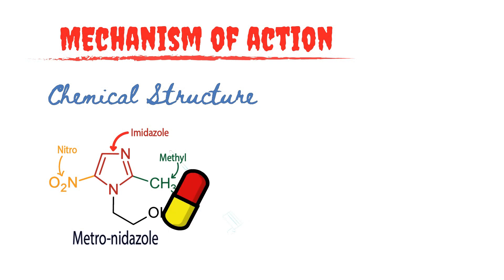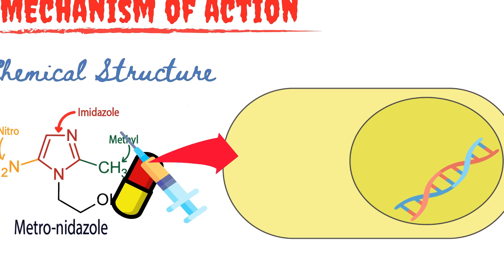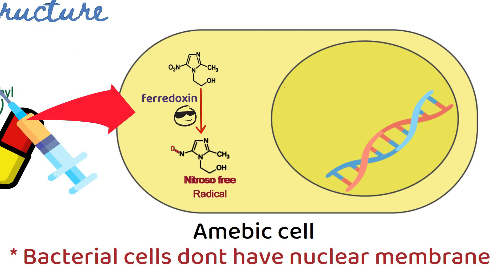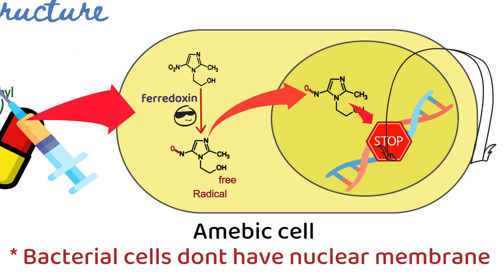After taking metronidazole orally or parenterally, the drug is absorbed by diffusion into the amoebic cell and other sensitive microorganisms. Amoebas and other susceptible microorganisms possess transport proteins such as ferredoxin, which transfer electrons to the nitro group of metronidazole, forming a nitroso-free radical. This is why only anaerobes are sensitive to metronidazole. The free radical then interacts with DNA, resulting in inhibition of DNA synthesis and degradation, and ultimately cell death.